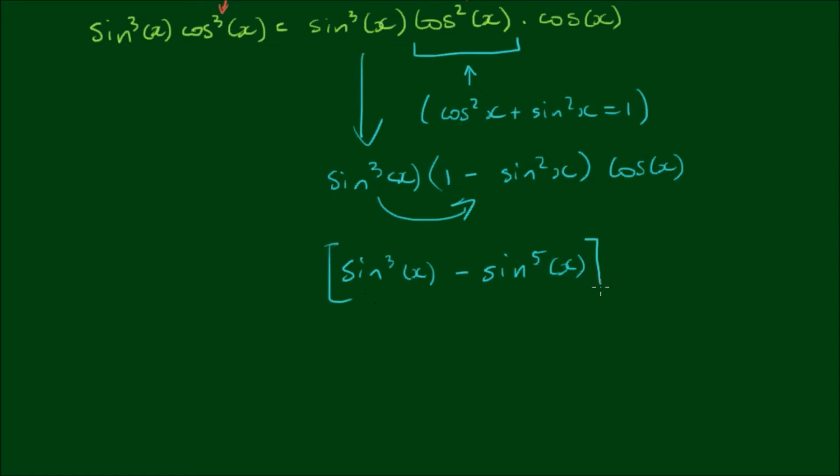All multiplied by cos of x. So the integral of sin cubed x by cos cubed x with respect to x becomes the integral of sin cubed x minus sin to the fifth x, all by cos x with respect to x.